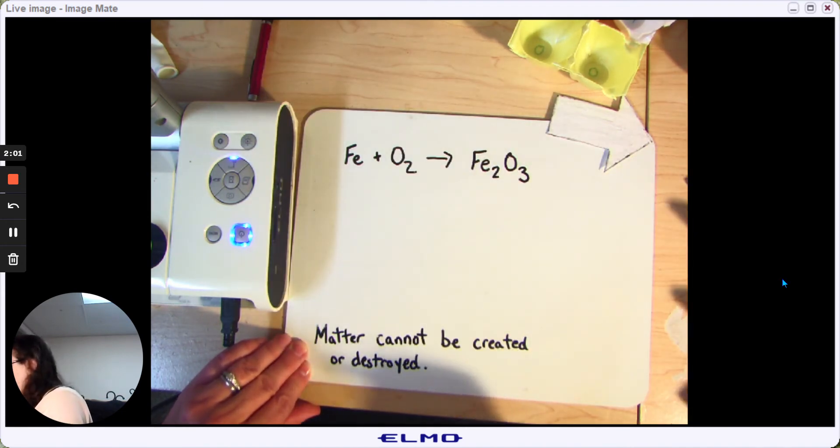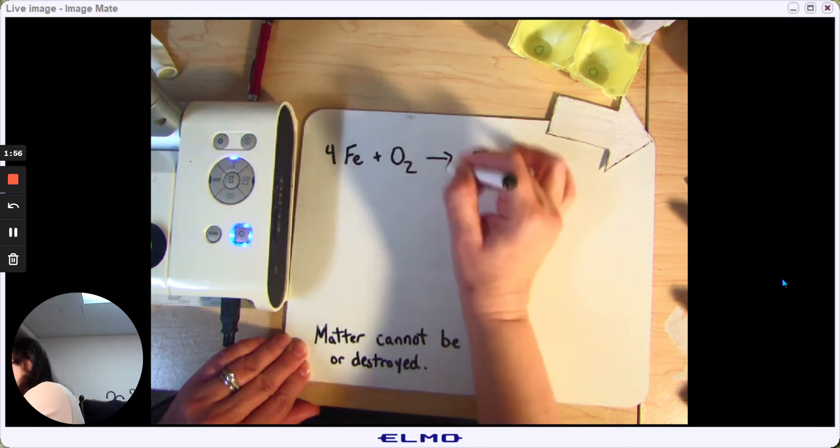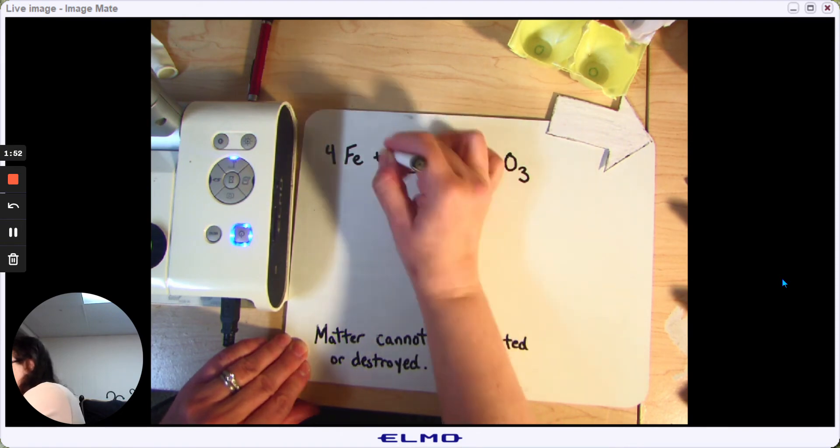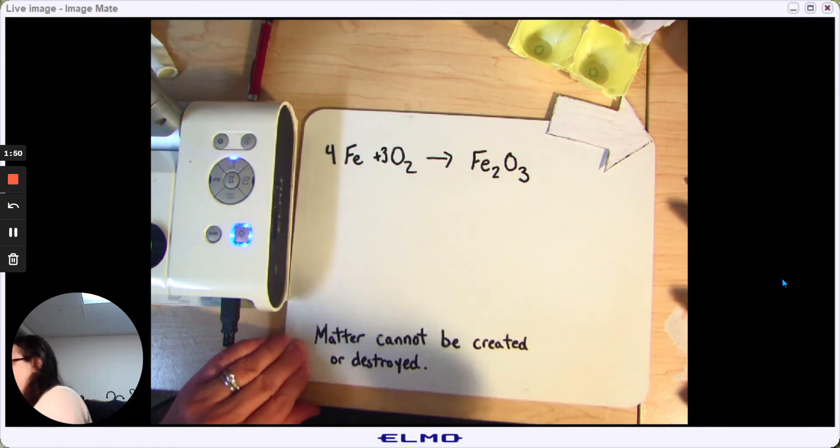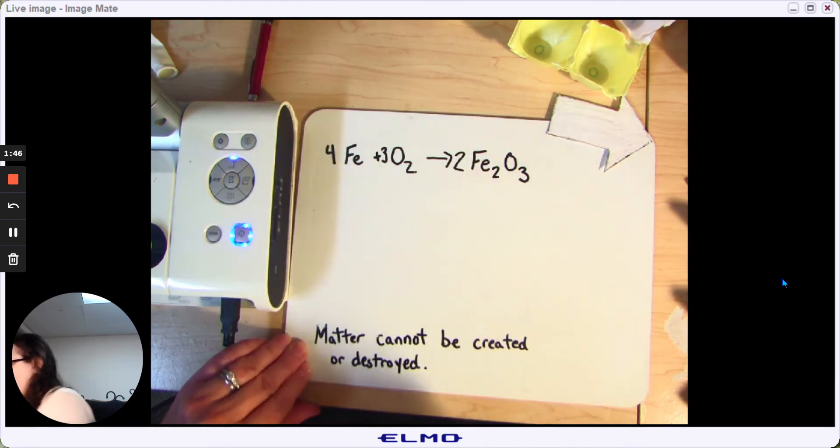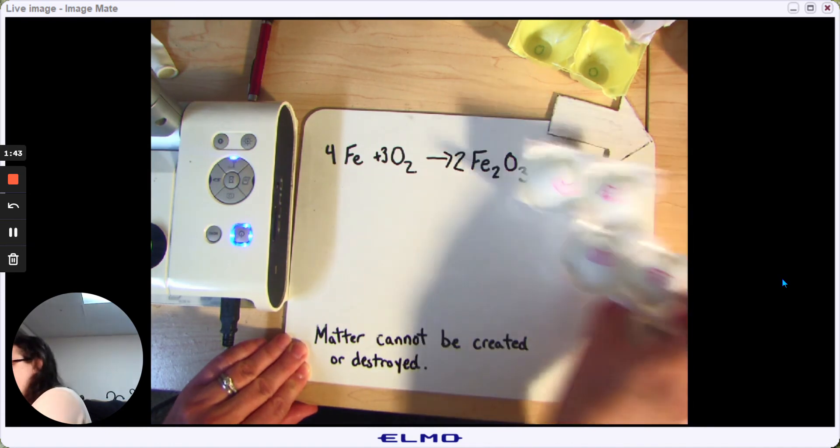And in order to get it even, we had to start with four iron atoms, and we had to start with three sets of oxygen atoms, and we ended up with two total rust molecules.